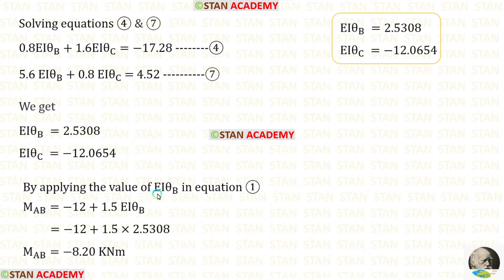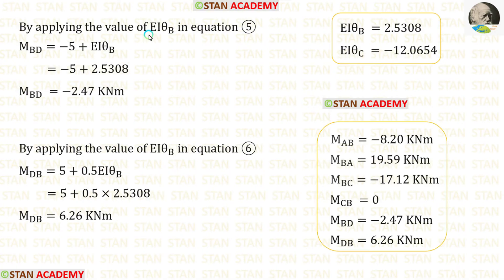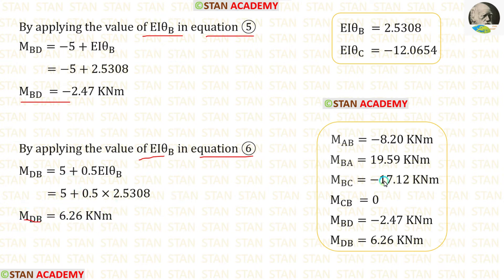Applying the value of EAθB in equation 1 gives us MAB. Applying EAθB in equation 2 gives MBA. Applying EAθB and EAθC in equation 3 gives MBC. Applying EAθB in equation 6 gives MBD. We have now obtained all of the moments in this analysis.